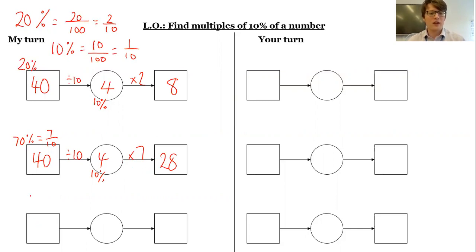What if I wanted to find, let's say, 60% of 230? Well, 60% is the same as 6 tenths. So I can divide by 10 to give me 10%, which is 23. So that's 10%. Now I need to times it by 6 to give me 60%. 23 times 6, I might just need a quick jotting. 6 times 3 is 18. 6 times 2 is 12, add the 1, gives me 13. So I've got 100 and 38.